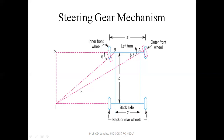If these two center lines are not intersecting at this instantaneous center, then our vehicle will not take a proper turn towards the right side or to the left side. The condition is that both center lines of the front and rear axle should meet at one common point so that there will be no overturning or skidding of the vehicle.